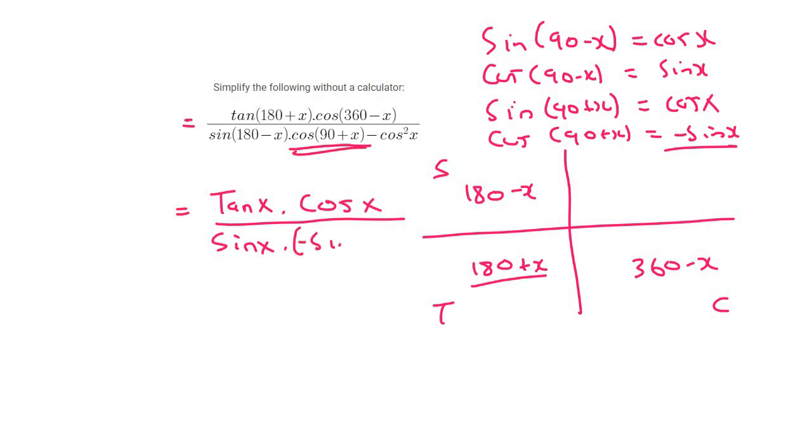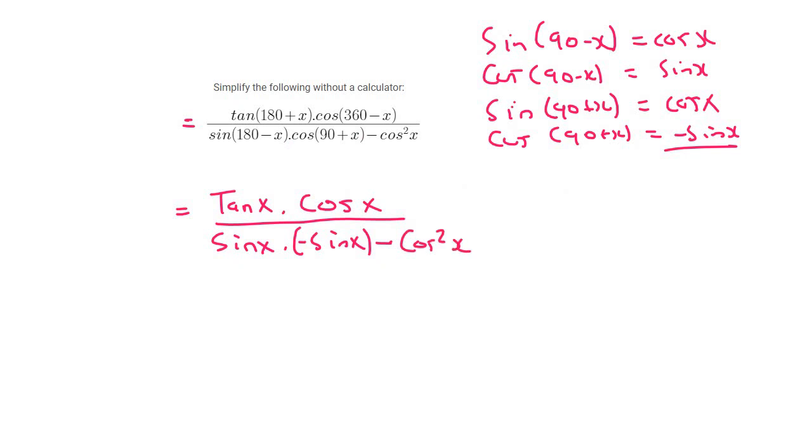So that's going to be negative sin x, and then there's a minus over here so look out for that. And then it's just cos squared x. There's nothing we can really do there, so that's just going to be cos squared x.